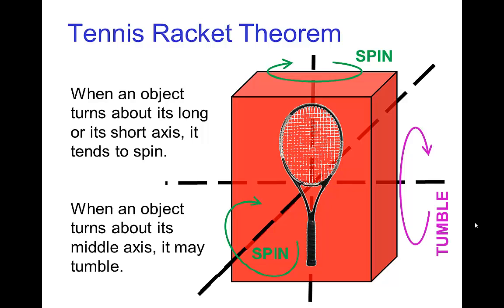And basically the tennis racket theorem says that for objects, they have a long axis, a short axis, those two are perpendicular to each other.